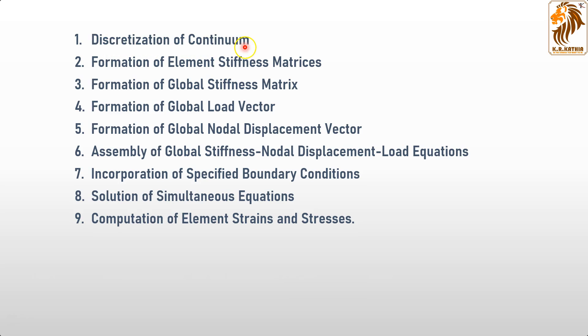To summarize: we divide the element into parts, find the matrix K, form the global stiffness matrix by summing all elements, find the load vector, determine global nodal displacement, then assemble the equations as K times U equals F, incorporate boundary conditions, solve the equations, and finally get the elemental stresses.